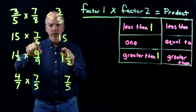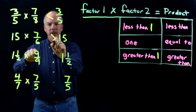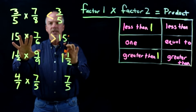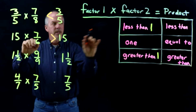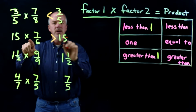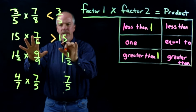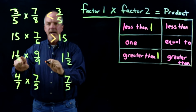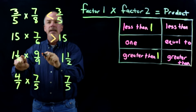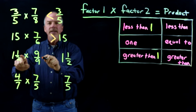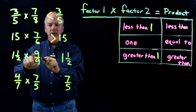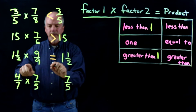15 times 7 sixths — how does that compare to 15? Well, 7 sixths is more than 1, so my product will be greater than 15. And again, I'm not doing calculations — I just know this if I know these three principles. One and a half times 9 over 9: 9 over 9 is 1, so 1 and a half times 1 will be equal to what I started with. My product will equal 1 and a half.